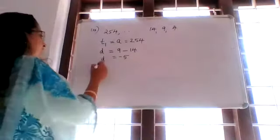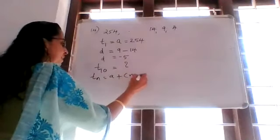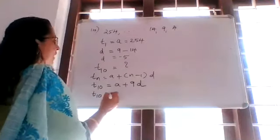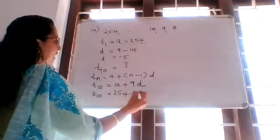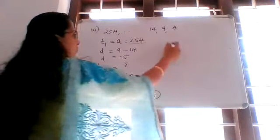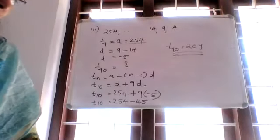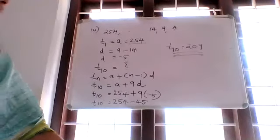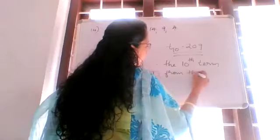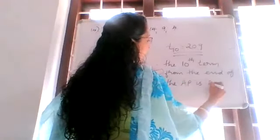We want to find T10. Using TN equals A plus N minus 1 into D, T10 is equal to A plus 9D. Replacing: 254 plus 9 into negative 5 equals 254 minus 45. So T10 is equal to 209. Therefore, the 10th term from the end of the AP is 209.